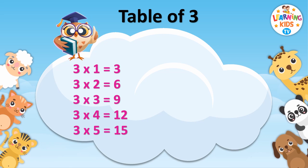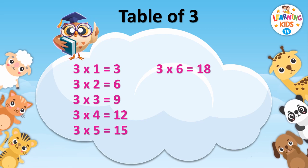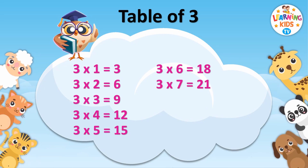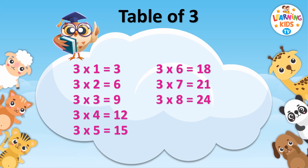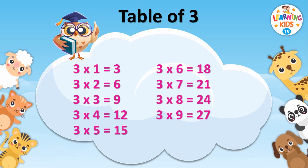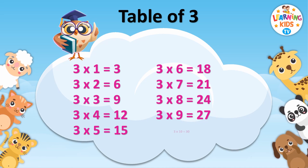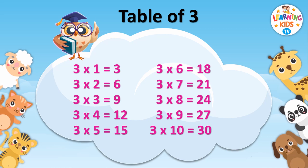3 sixes are 18. 3 sevens are 21. 3 eights are 24. 3 nines are 27. 3 tens are 30.